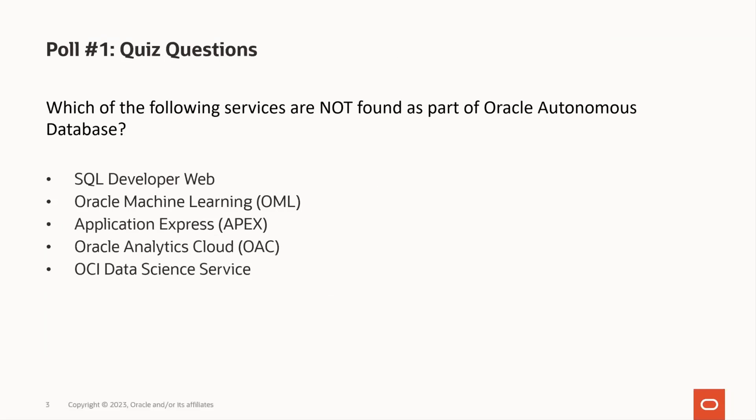Which of the following services are not found as part of Oracle Autonomous Database? Is it SQL Developer Web? Is it Oracle Machine Learning? Application Express? Oracle Analytics Cloud? OCI Data Science? The correct answers are Oracle Analytics Cloud — while it certainly accesses data from Autonomous Database and is integrated with Oracle Machine Learning, allowing you to access machine learning models through OAC, it is not actually part of the Autonomous Database.